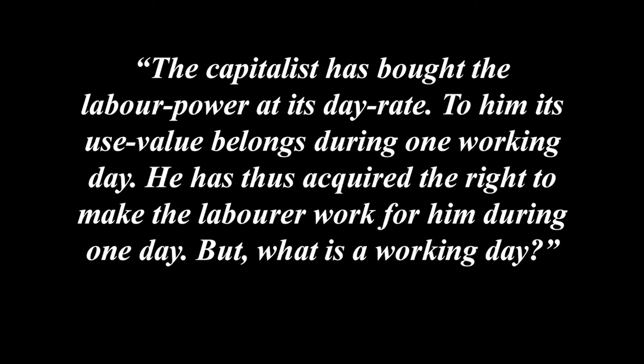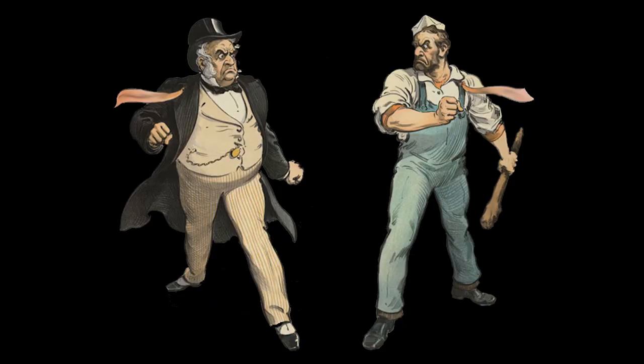We see that the variations of the working day fluctuate within physical and social bounds, but both these limiting conditions are of a very elastic nature, with real-world examples ranging from 8 to 18 hours a day. The capitalist has bought the labour power at its day rate, and its use value belongs to him during one working day. He has thus acquired the right to make the labourer work for him during one day. But what is a working day?